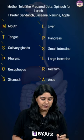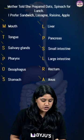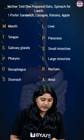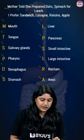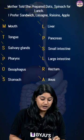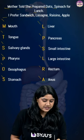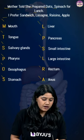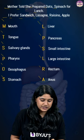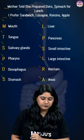So this is the easiest way to remember: Mother told she prepared oats, spinach for lunch — 'for' is an extra word, 'I' is an extra word — prefer sandwich, lasagna, raisins, apple.